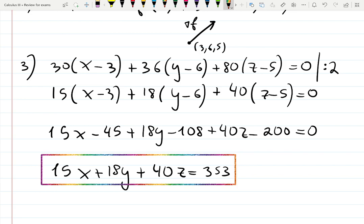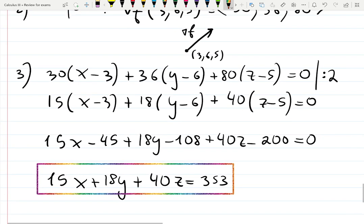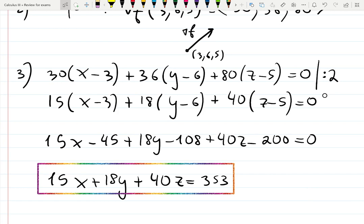I think it's fun if at the very end I start saying the answer in Russian. Some students told me they think it's educational. So it's going to be 15x plus 18y plus 40z equals 353. We actually don't say z, we say zet.